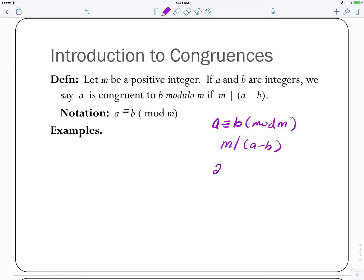For example, 27 is congruent to 2 mod 5, because if we look at the difference between 27 and 2, it's 25, and 5 divides evenly into that. 81 is congruent to 1 mod 10, because if we look at 81 minus 1, 10 divides evenly into that.